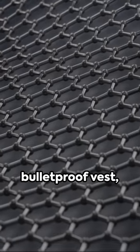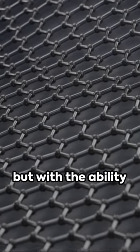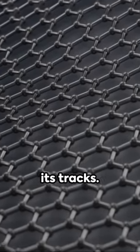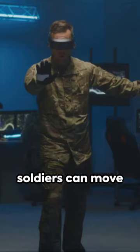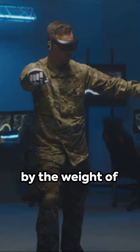Imagine a bulletproof vest thinner than paper, but with the ability to stop a bullet in its tracks. Graphene's flexibility and lightness means soldiers can move with ease, unburdened by the weight of traditional armor.